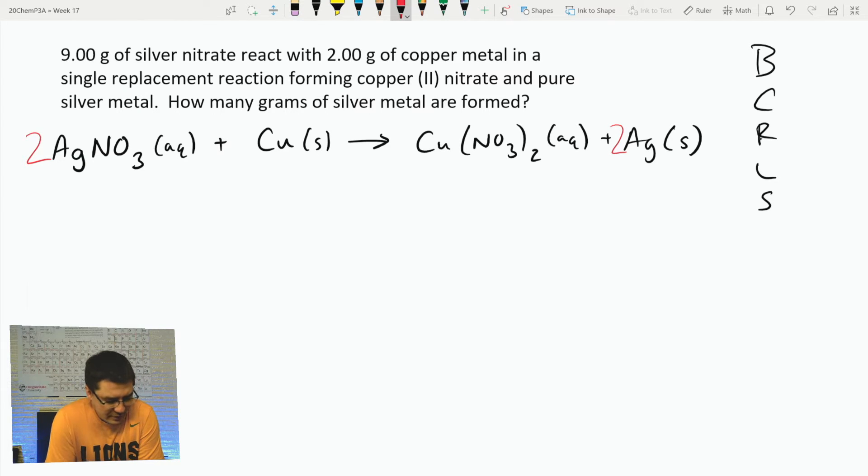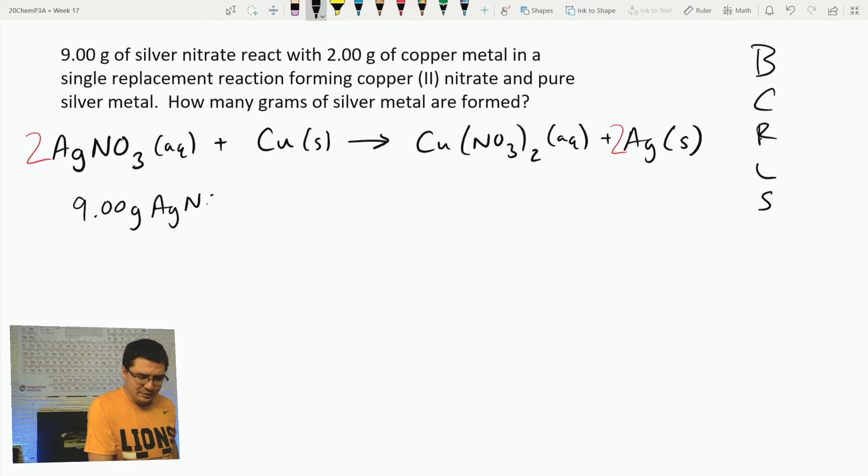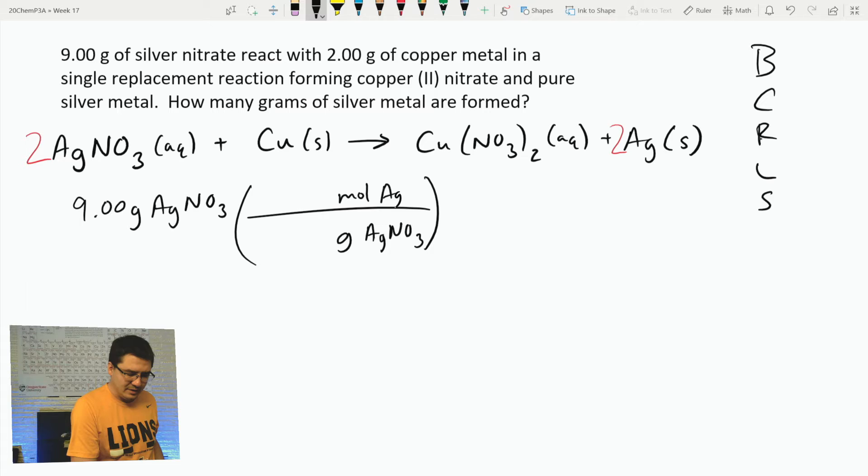We did the balancing. Now we do the converting to moles, so I'm going to take 9.00 grams of AgNO3 and divide by the molar mass. I want to convert from grams to moles. We're not really doing the stoichiometry yet, just converting grams to moles. One mole is equivalent to silver 107.9 plus nitrogen 14.01 plus three oxygens, that would be 48.